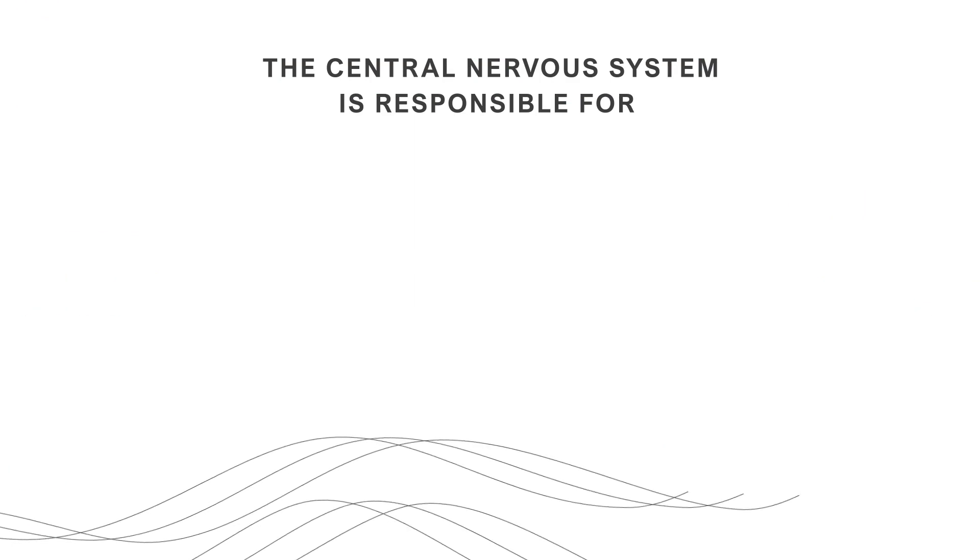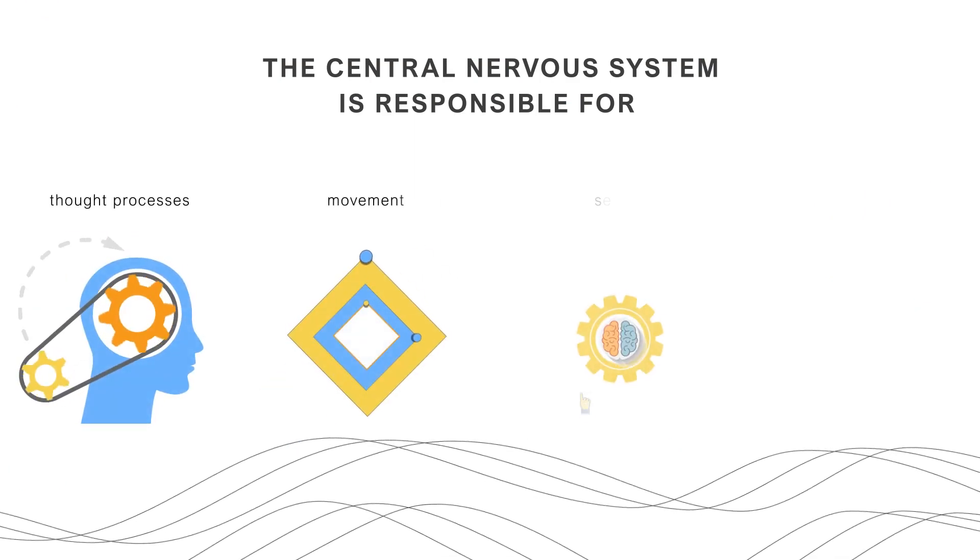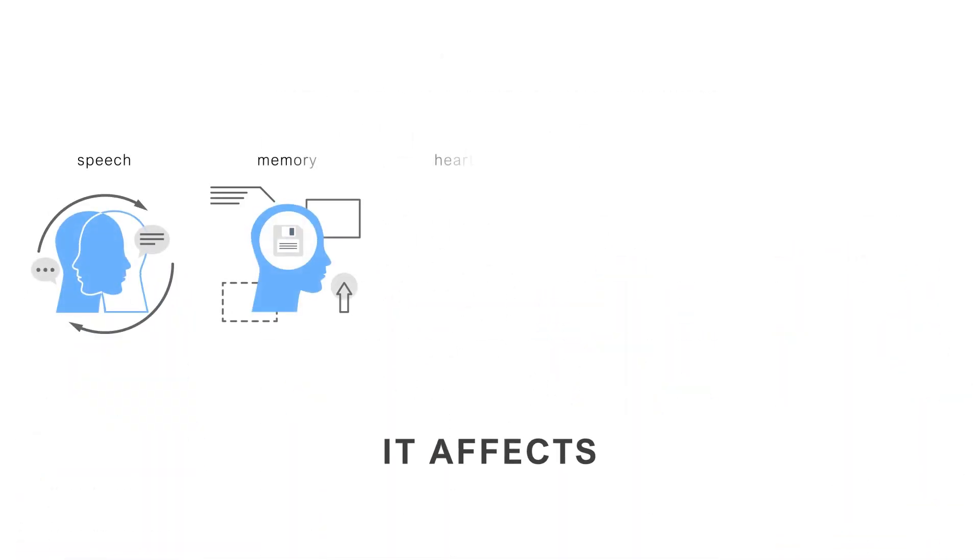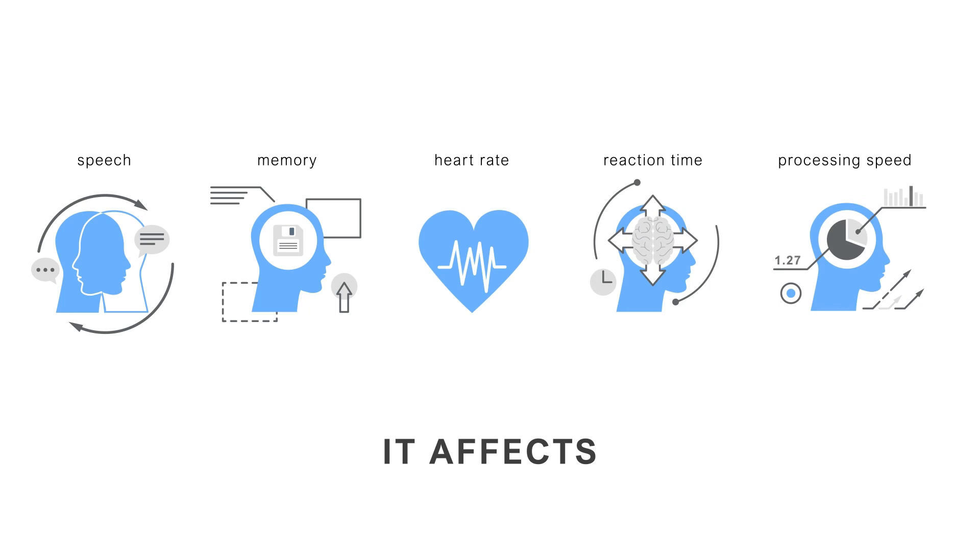The central nervous system is responsible for control of thought processes, movement, senses, and emotions. It affects speech, memory, heart rate, reaction time, and processing speed as well.